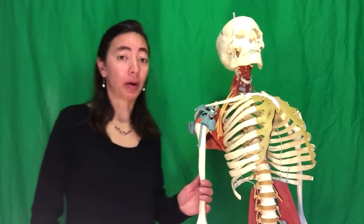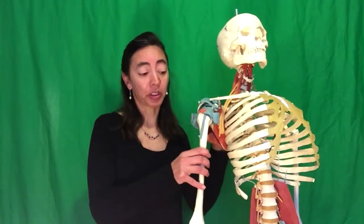What is the rotator cuff, people ask? The rotator cuff consists of four tendons and muscles that attach right to the humerus, which is the arm bone.